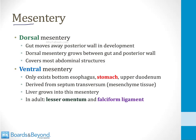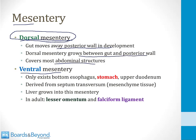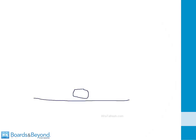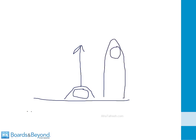Most connective tissue structures in the abdomen come from dorsal mesentery, because the gut moves away from the posterior wall during development, pulling that mesentery with it. The gut tube migrates away from the posterior wall, and dorsal mesentery grows between the gut and the posterior wall, covering most abdominal structures.